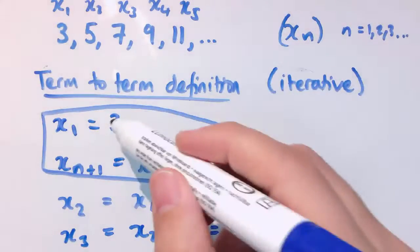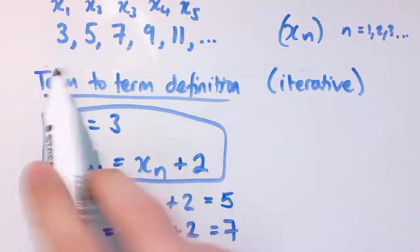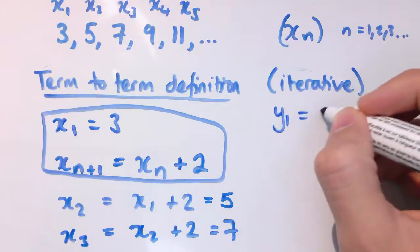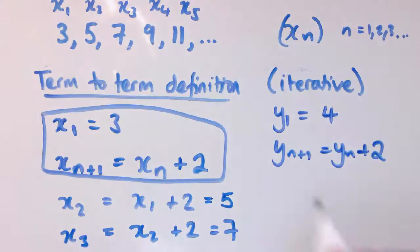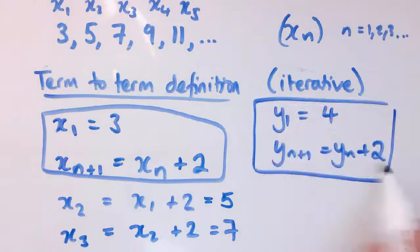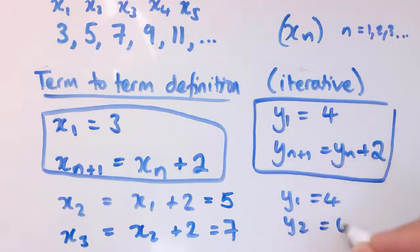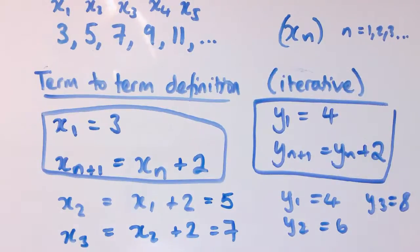Notice we really do need both parts of the definition: the starting term and the rule. The rule tells us what type of sequence it is — that it's going up in twos — but unless you also tell me where to start, I don't know. For example, I could have a different sequence y, given by y1 equals 4 and yn plus 1 equals yn plus 2. It has the same rule — going up in twos — but starts at 4, so it gives 4, 6, 8 — a different sequence. We do need both parts for iterative definitions.